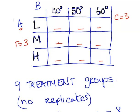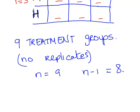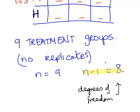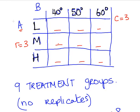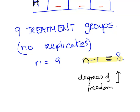In the case where there are no replicates, using this example, each position has a single measurement, so the total number of measurements is 9. Therefore N equals 9, and the total degrees of freedom N-1 equals 8.